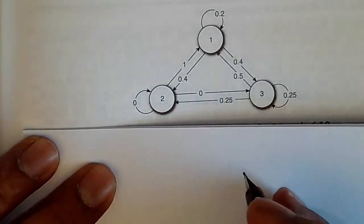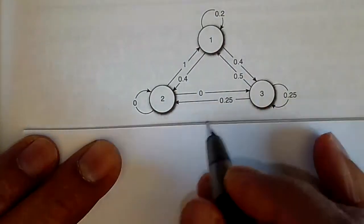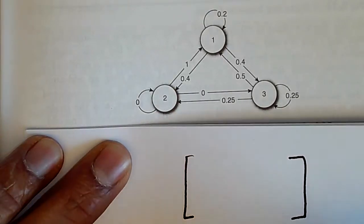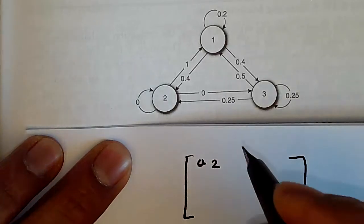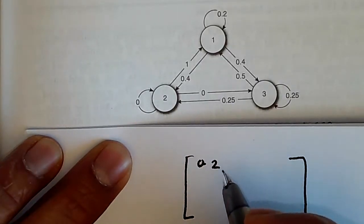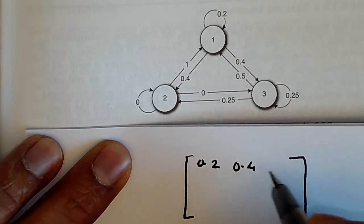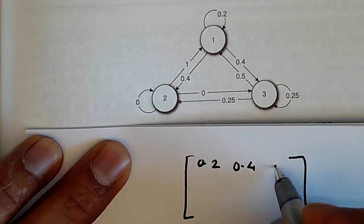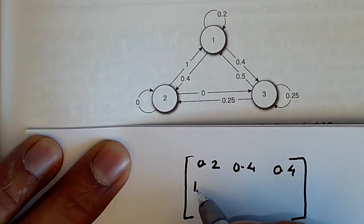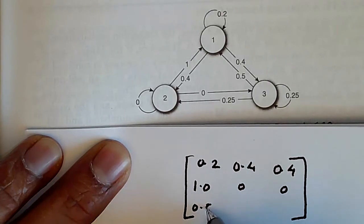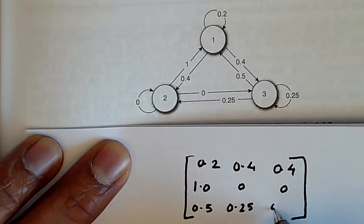What we see right away from observing it is that the transition probability matrix is going like this. So P11 is 0.2, then P12, probability going from state 1 to state 2 is 0.4, and P13 is 0.4. P21 is 1.0, so these are zeros. And then P31 is 0.5, P32 is 0.25, and those are going to be 0.25.